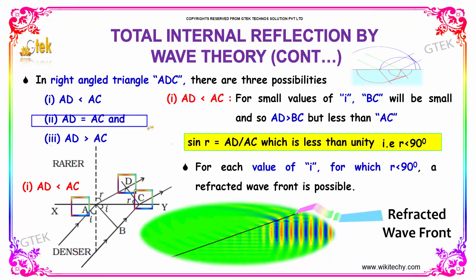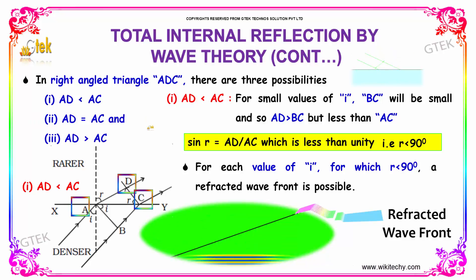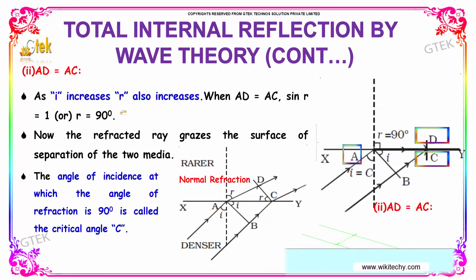Next, we will see AD equal to AC. As i increases, r also increases. When AD is equal to AC, sine r is equal to 1 or r equal to 90 degrees.